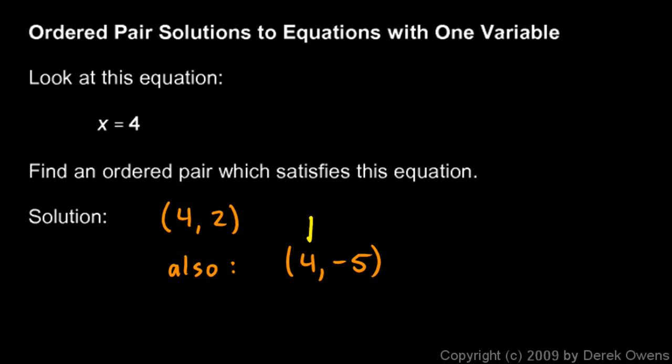This also has x as negative 4. Y happens to be negative 5, but that doesn't really matter. The equation just says that x equals 4 and that's all. So this would also be a solution here, 4 comma 1,000, and so on. We could have an infinite number of solutions. It doesn't matter what y is.